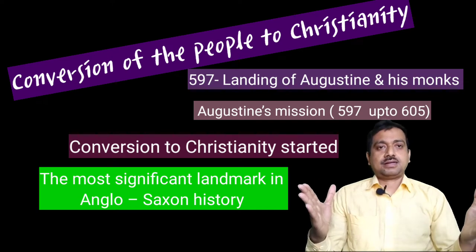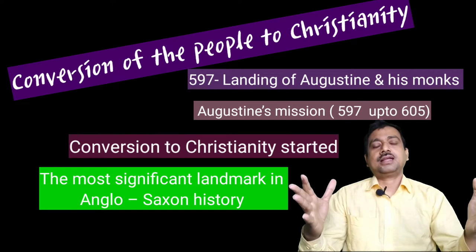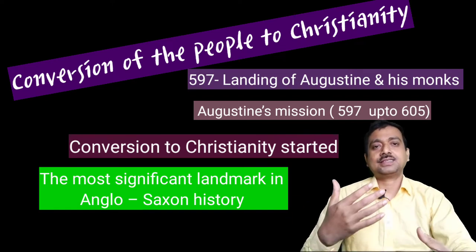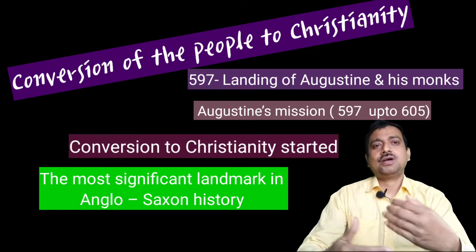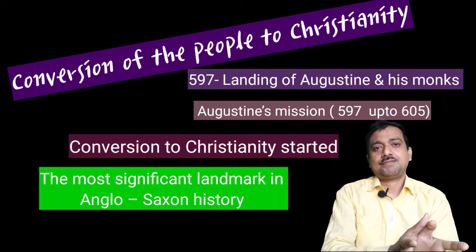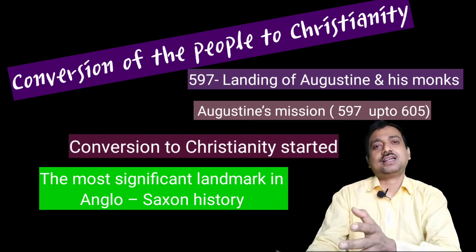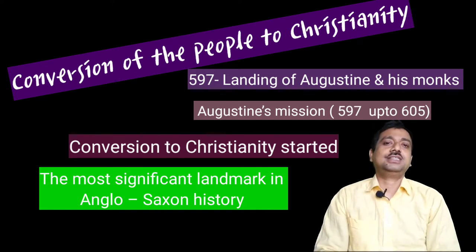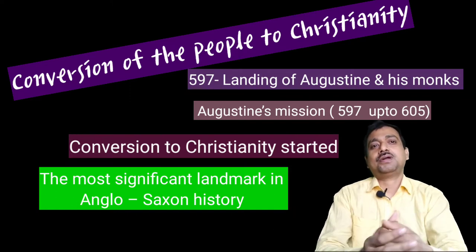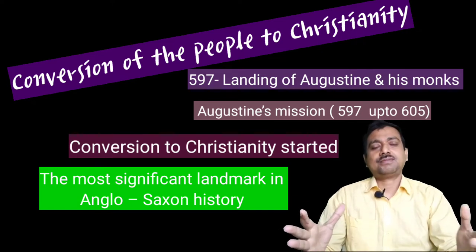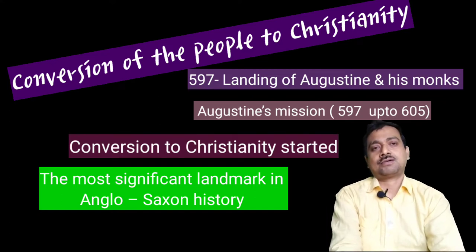As the Anglo-Saxon, Jute-Saxon, and Anglian peoples were trying to gain authority over the new land and intermingle with new races, different historical happenings also occurred. 597 marks the landing of Augustine and his monks, when the conversion to Christianity started. The most significant landmark in Anglo-Saxon history is these so-called pagan people turning to Christianity. Augustine's mission started in 597, and most of England was converted to Christianity by the end of the 600s.